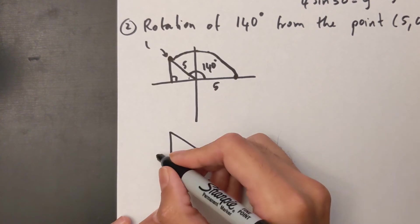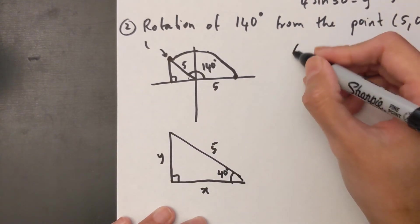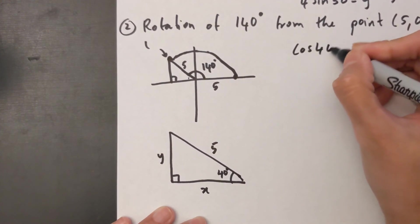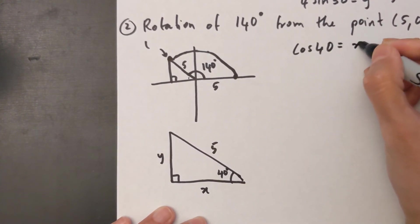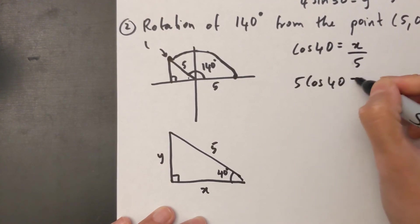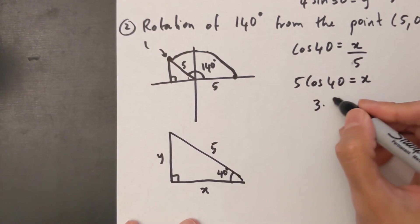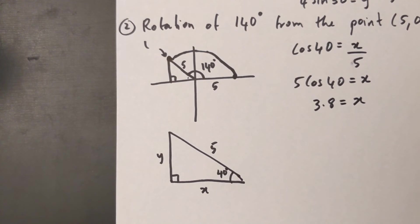Now again I need to find my X and my Y coordinate in the exact same way. So cos 40° equals X over 5. 5 cos 40° equals X. I'll put that in my calculator. I get 3.8 equals X.